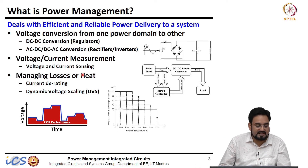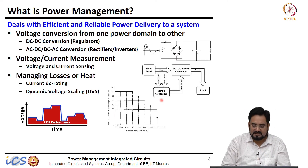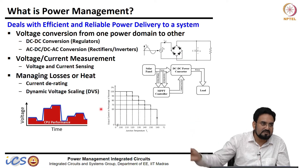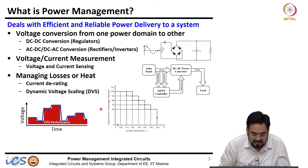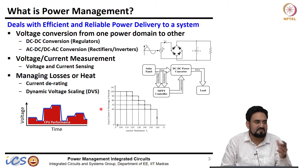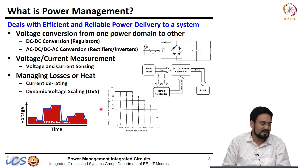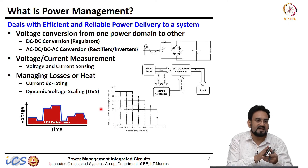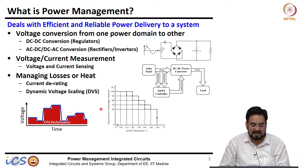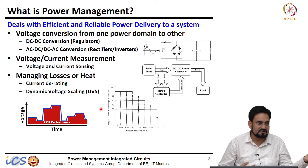Power management can also be associated with managing losses or heat. If your load is drawing a few amps of current, after some time it gets heated due to I-squared-R losses in that load. Most systems have a maximum temperature specification — we cannot operate beyond that because there is a risk of damaging the system. A best example is your cell phone: if it gets heated while charging a battery, the battery may explode, the phone may break, and you cannot even hold it at 60 or 80 degrees.